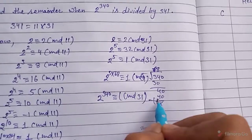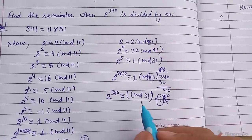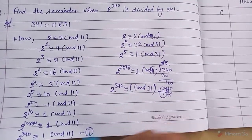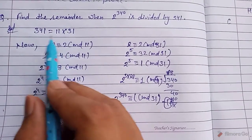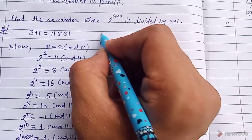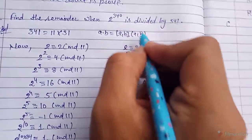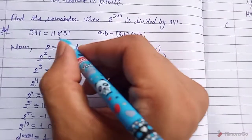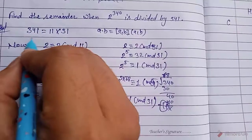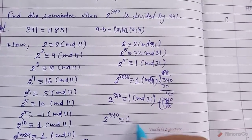Now applying the theorem we proved: a ≡ b (mod m1) and a ≡ b (mod m2) implies a ≡ b (mod m), where m = LCM(m1, m2). Since 11 and 31 are coprime, their GCD is 1, so LCM(11, 31) = 11 × 31 = 341. Therefore 2^340 ≡ 1 (mod 341).